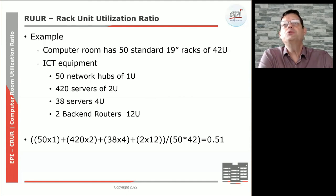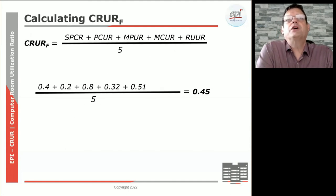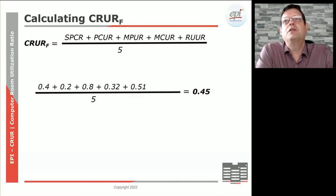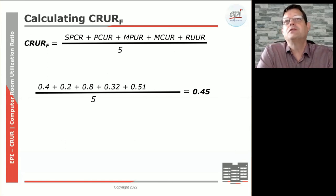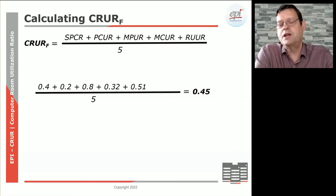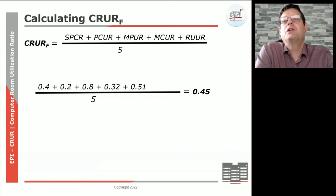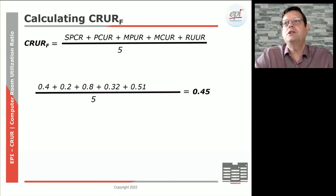When we calculate the total CRURF, we take the previous factors from the various scenarios — the stranded capacity, the power utilization, the mechanical versus power ratio, the mechanical capacity utilization, and the rack allocation — and divide strictly by five. In this particular example, the overall CRUR facility for this data center comes out at 0.45.